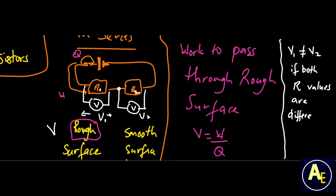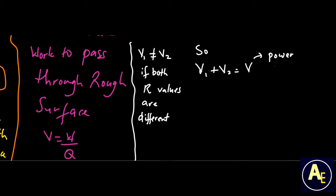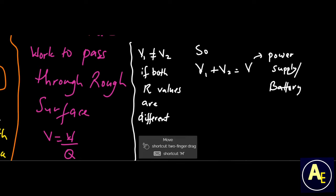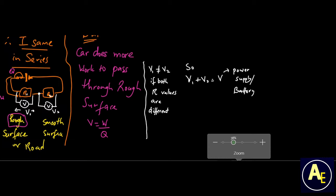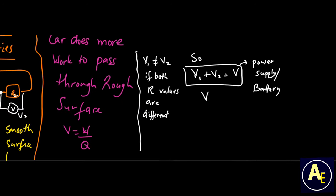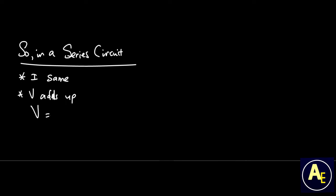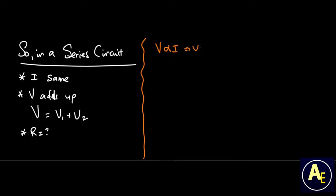If we attach two voltmeters across these two resistors, once they are not identical they will obtain different voltage values. These voltage values — called V1 and V2 for R1 and R2 respectively — will add up to give us the voltage from the power supply, in this case our battery. So in a series circuit, the voltage splits or adds up, giving us a total equal to the battery's voltage at all times.